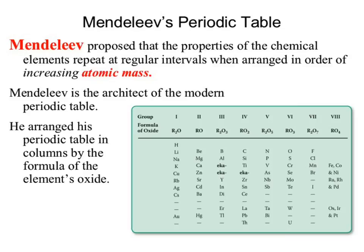Mendeleev came through and proposed his own version of the periodic table with very similar properties to the previous ones. He looked at atomic mass, and we really give him credit for determining our current periodic table. He looked at atomic mass and associated elements back to chemical compounds based on how they reacted with oxygen. The periodic table as he drew it looks pretty similar for the most part to our current one — there are some mismatches, but for the most part it's pretty close.